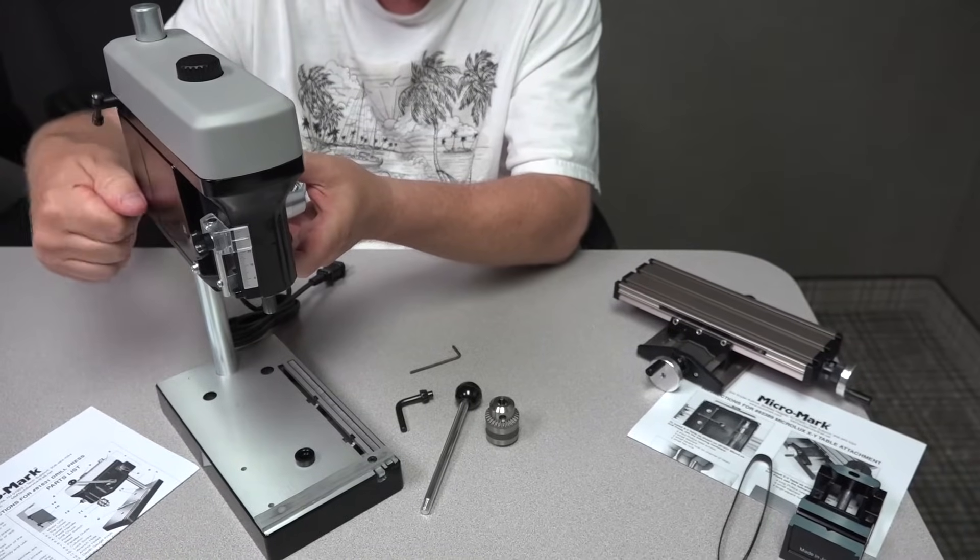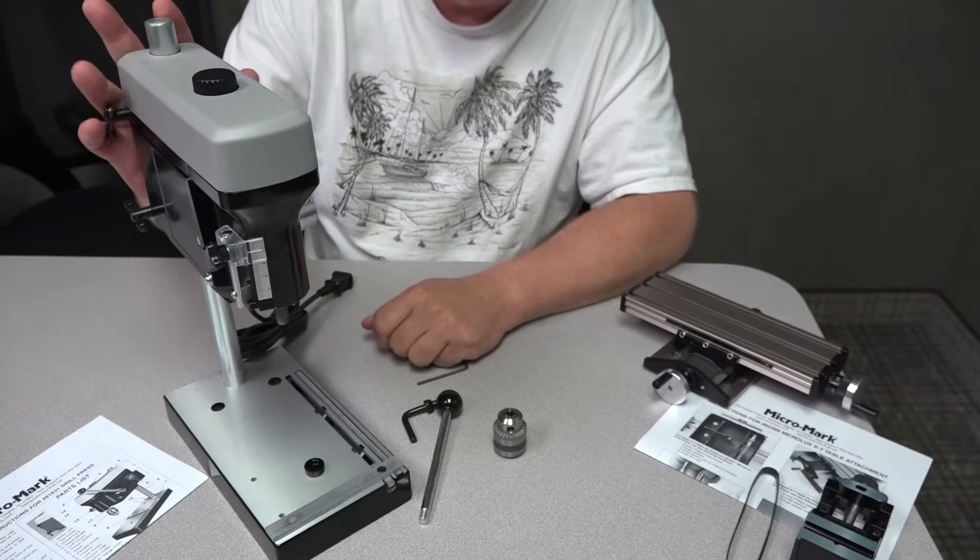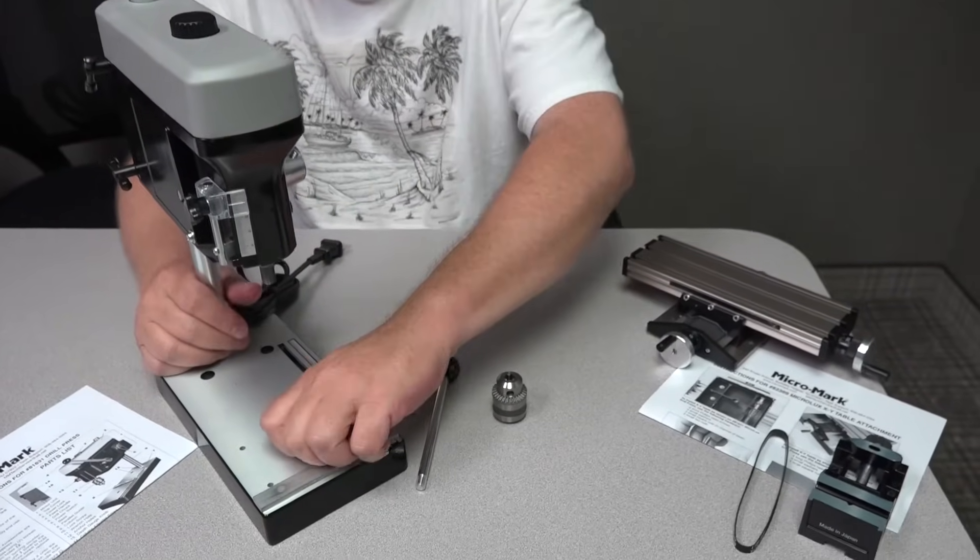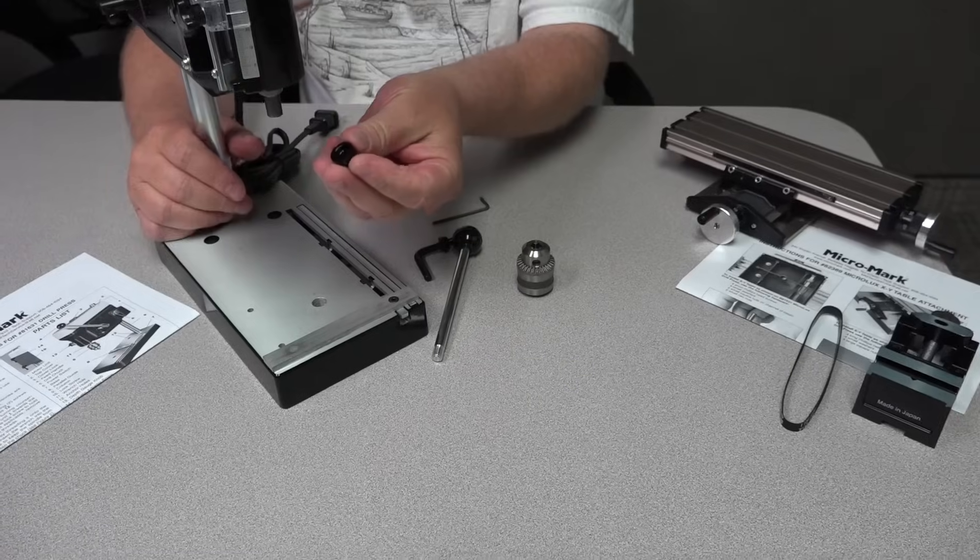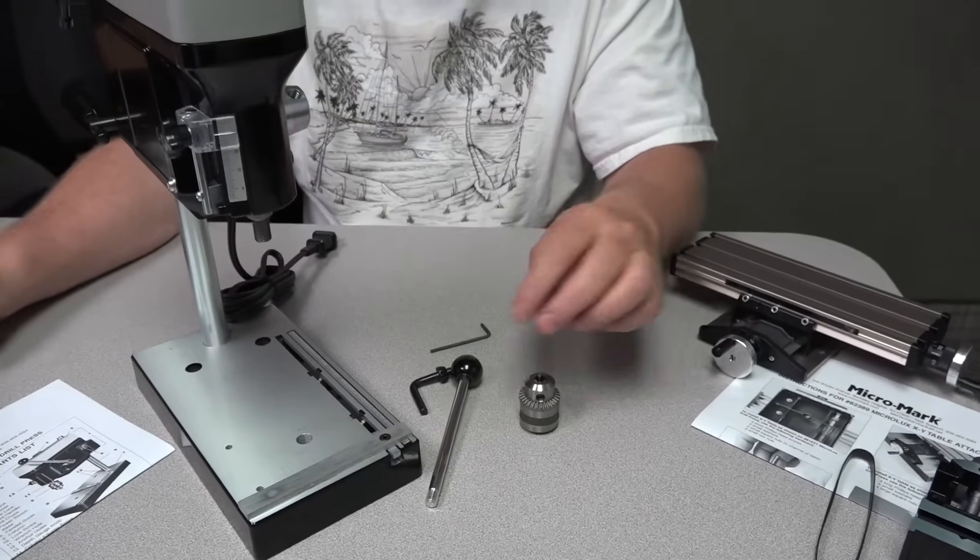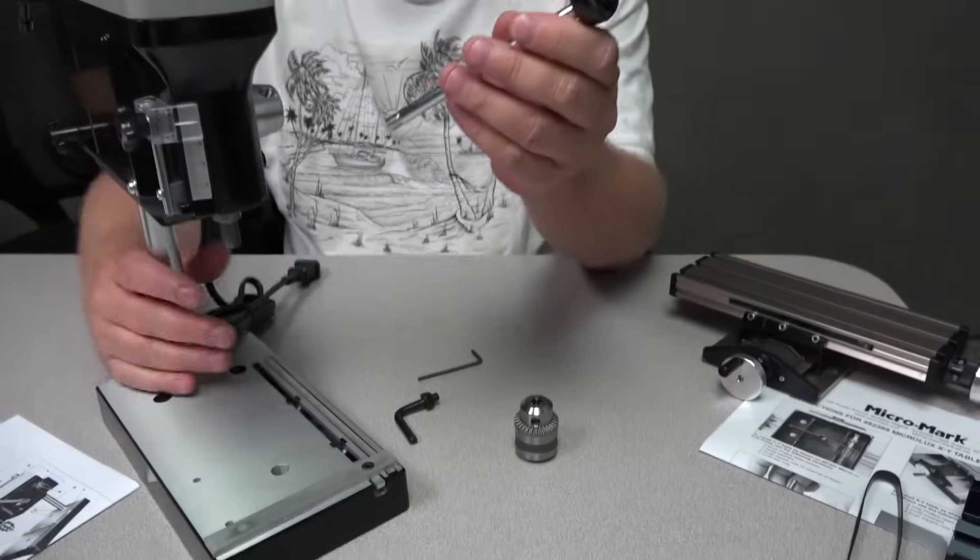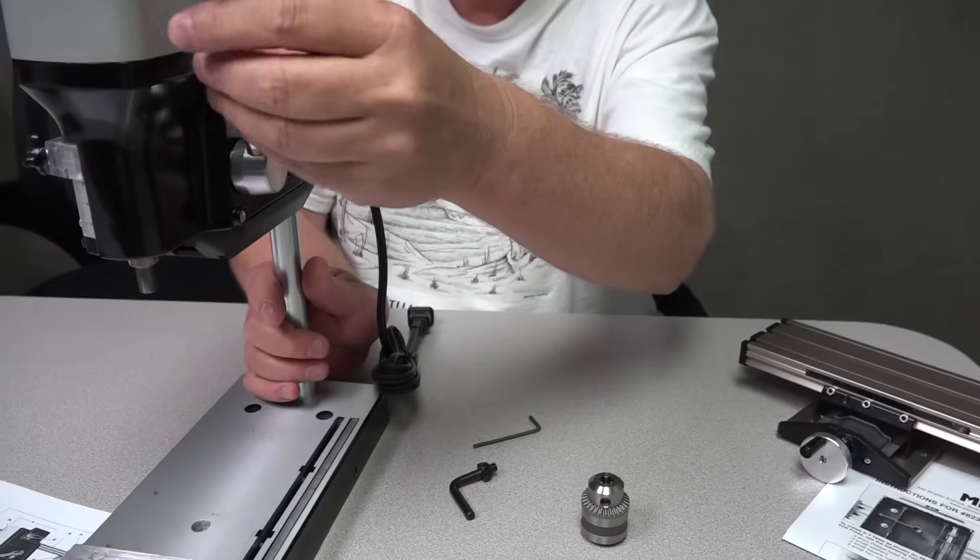It comes with a full set of instructions. Now the head's firmly clamped onto the column. It comes with some packing material that needs removed. This protects the threads on the bottom of the spindle which can be discarded now. It comes with a handle that you can thread on the tool which will allow you to raise and lower the spindle.